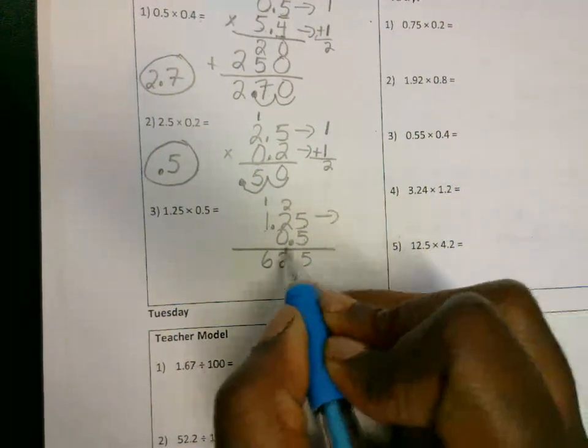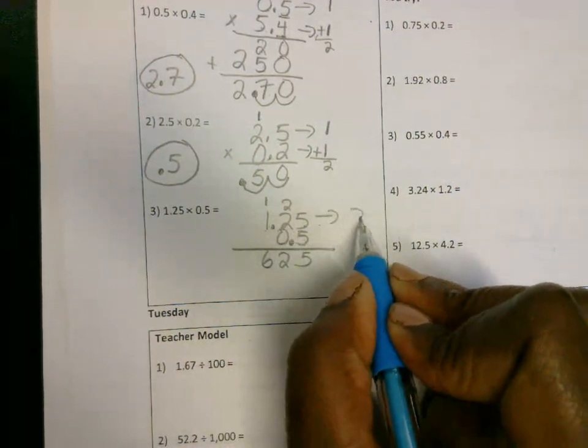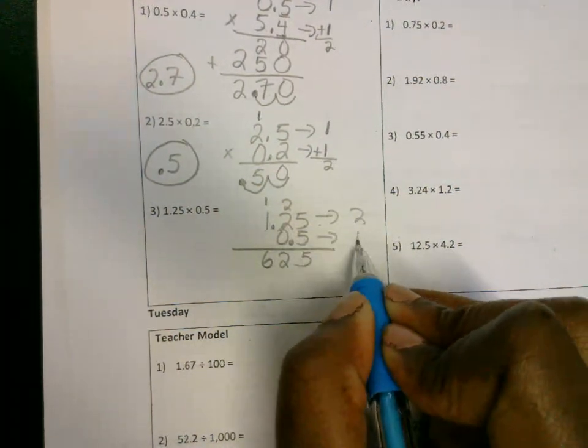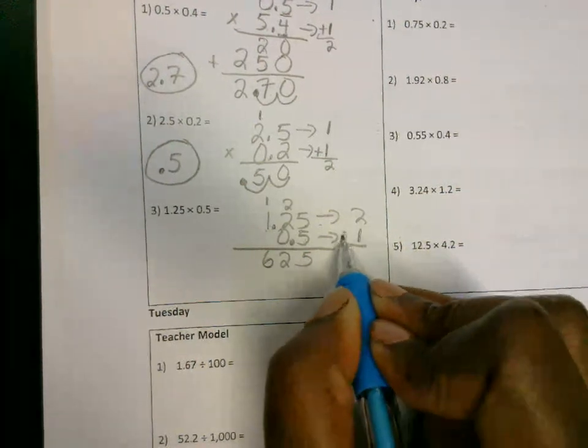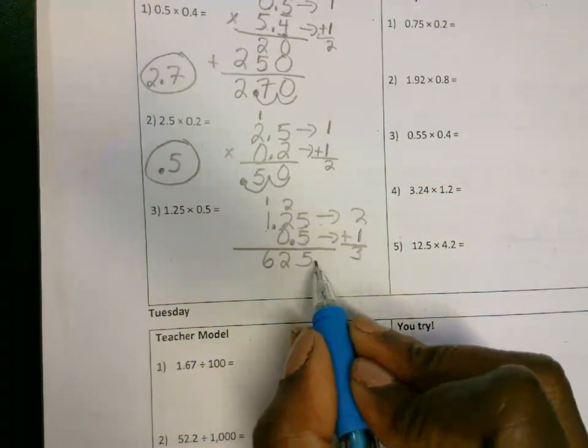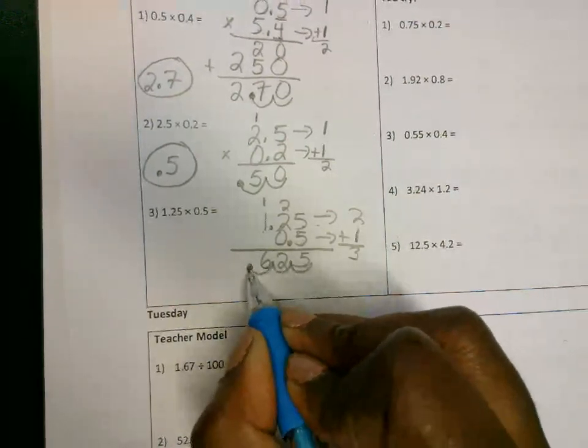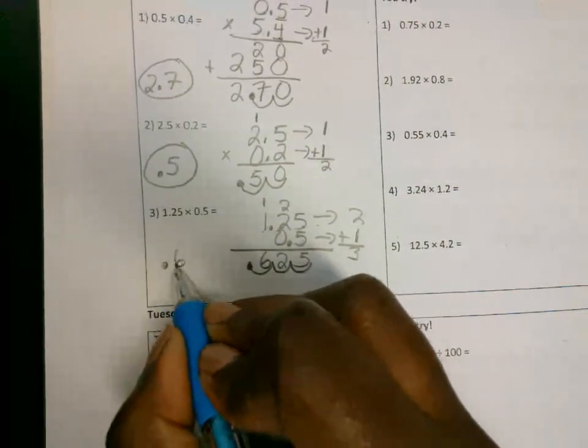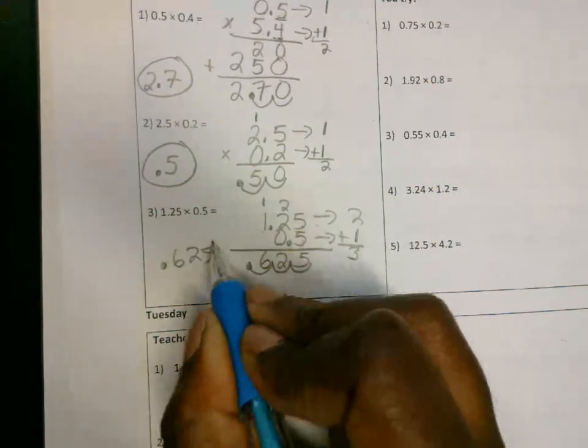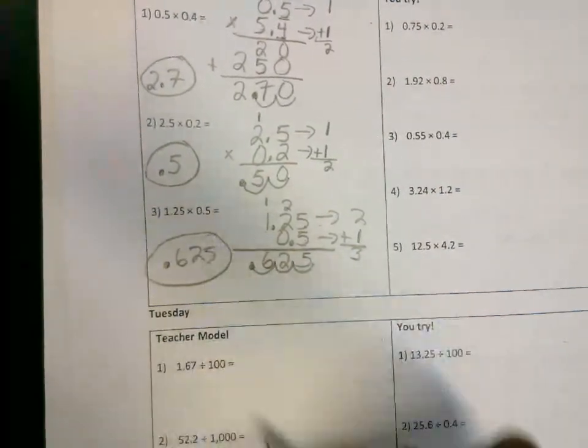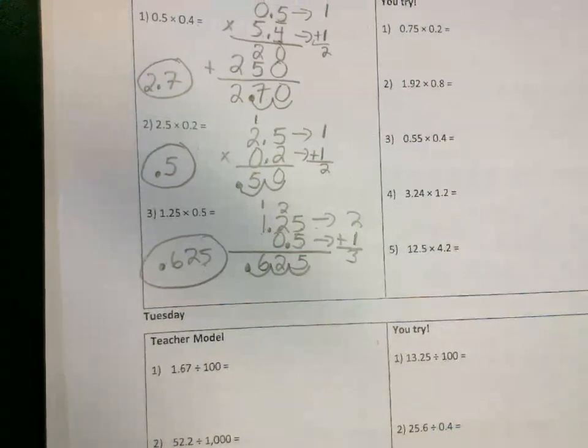How many decimal spaces here? We got two decimal spaces here and one decimal space here. That's going to be a total of three decimal spaces. Start from the back of the number, move one, two, three times. So my answer here is going to be a decimal, 625 thousandths, because the five is in the thousandths place. All right, so we got those. Please make sure that you show your work here.